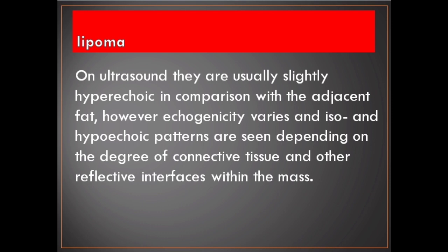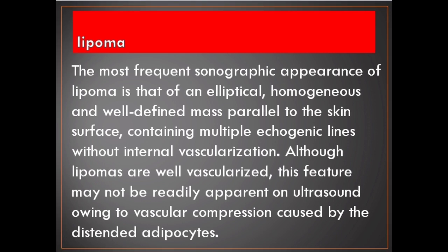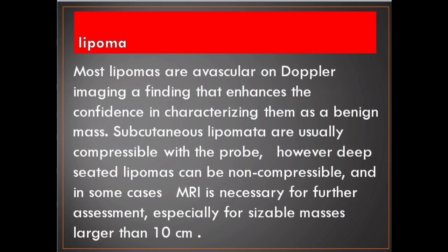On ultrasound they are usually slightly hyperechoic in comparison with the adjacent fat; however, echogenicity varies and iso- and hypoechoic patterns are seen depending on the degree of connective tissue and other reflective interfaces within the mass. The most frequent sonographic appearance of lipoma is an elliptical, homogeneous, well-defined mass parallel to the skin surface, containing multiple echogenic lines without internal vascularization. Most lipomas are avascular on Doppler imaging, a finding that enhances confidence in characterizing them as a benign mass.